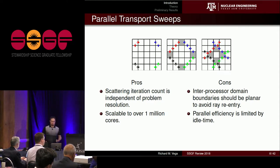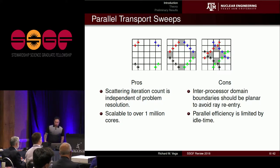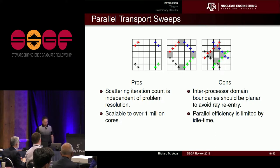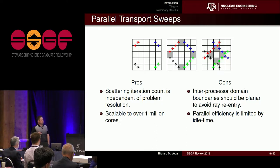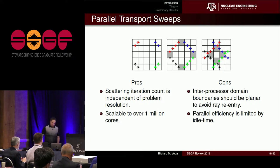Unlike parallel block Jacobi, this approach has been proven scalable to over a million cores. The cons are that not all geometries divide easily along interprocessor domain boundaries, load balancing is not guaranteed, and there is idle time at the beginning and end of the sweep where processors in the middle wait for information. This idle time caps parallel efficiency, though if you have enough angles in your quadrature set, it's not really a problem.